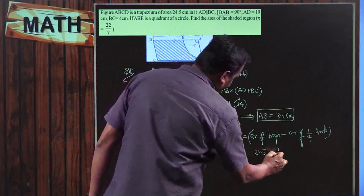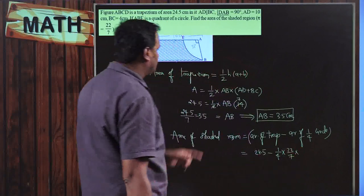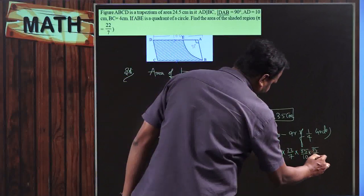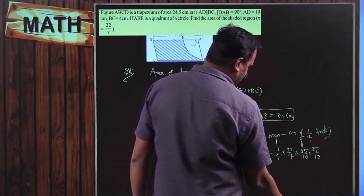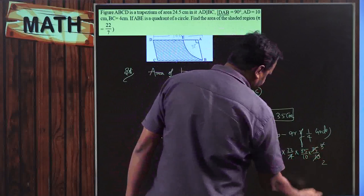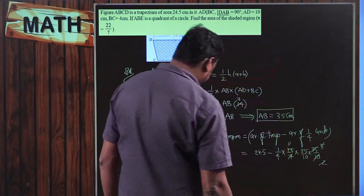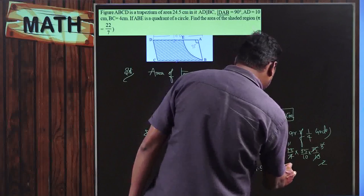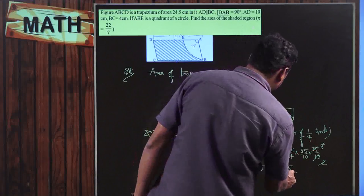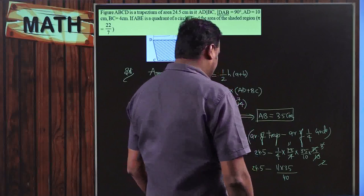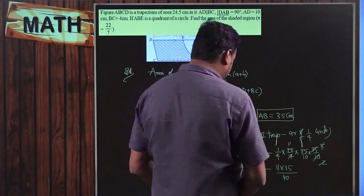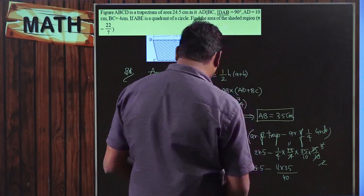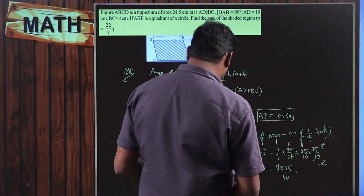So: 24.5 − (1/4) × π × r². π = 22/7 and radius = AB = 3.5, which I write as 35/10 × 35/10. Cancelling: 7 fives are 35, 5 twos are 10, 2 elevens are 22. So I am left with (11 × 35) in the numerator and (4 × 10 = 40) in the denominator. 11 × 35 = 385, and 385 ÷ 40 = 9.625.